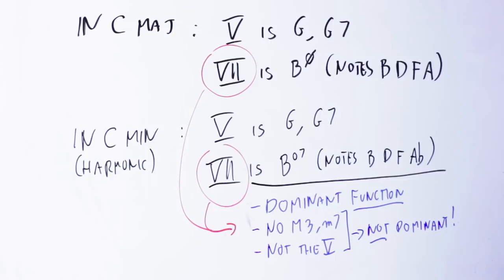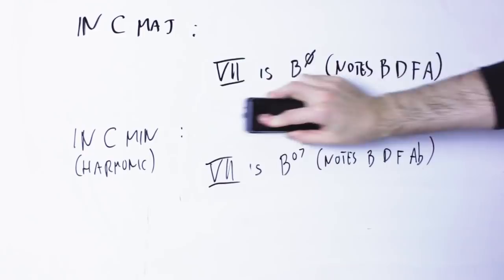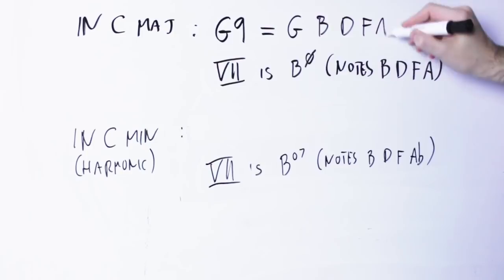If at this point you want to start screaming in frustration, I will understand. Now at this point I have to mention that the paradox is not as bad as it seems, because indeed those chords can be seen as dominant ninth chords without a root. What do I mean with that? Well in C major, the dominant ninth chord G9 has the notes G, B, D, F and A.